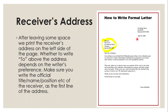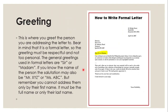On the left side of the page, following the sender's address and date, you write the address of the receiver. After leaving some space, we write the receiver's address on the left side of the page. Whether to write 'To' above the address depends on the writer's preference. Make sure you write the official title, name, and position of the receiver as the first line of the address. You have to mention the complete address of the receiver.